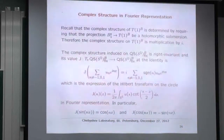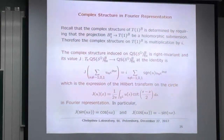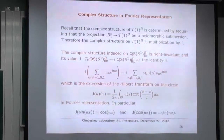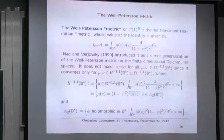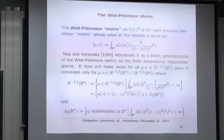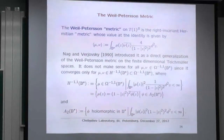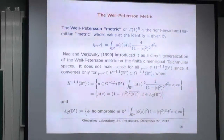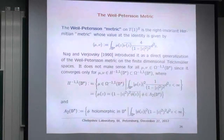The complex structure is in fact the Hilbert transform, written either in Fourier series or integral form. Now we come to the second hero: the Weil-Petersson metric, introduced in 1990 by Nag and Verjovsky, generalizing the classical Weil-Petersson theorem for classical Teichmüller spaces. They wrote a formula which looks very beautiful. Unfortunately the integral diverges — disease number two. The space has two ailments: it's not a topological group, and the Weil-Petersson metric is divergent.